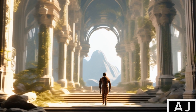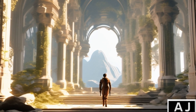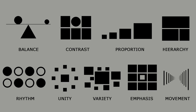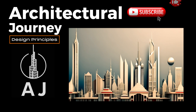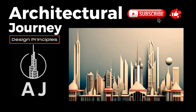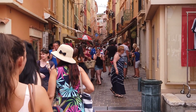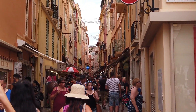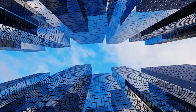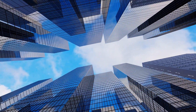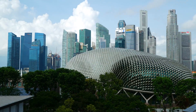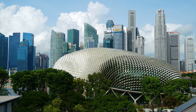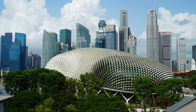Take a journey through the principles of architectural design and their relationships with each other. From balance to rhythm, every principle forms part of the design that shapes the built environment we live in today. Welcome to our architectural journey. Today we are going on a journey on the basic design principles of architecture. Architectural design principles are the building blocks of successful design. While they each focus on different elements of the design, they must work in tandem to ensure that a structure is visually aesthetic.